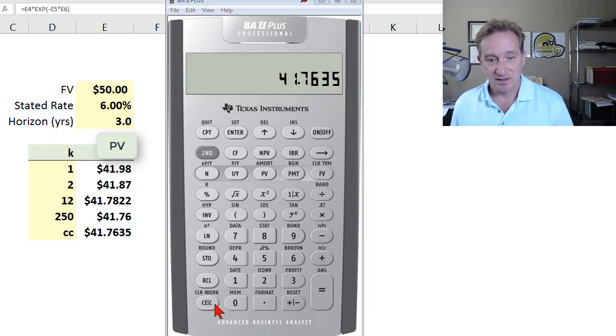So finally, I'll just do the monthly discrete using the time value of money keys. And we know that three years times 12 equals 36 periods. That's my n. My interest rate, we know is, well, it's six divided by 12 periods per year is half a percent per period.